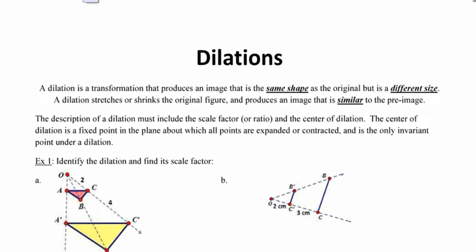Because dilations produce images that are the same shape, that means that the angle measures are preserved — in other words, the angle measures are kept the same. A dilation will either stretch or reduce the original figure, and will produce something that is similar to the pre-image, similar meaning same shape but maybe a different size.